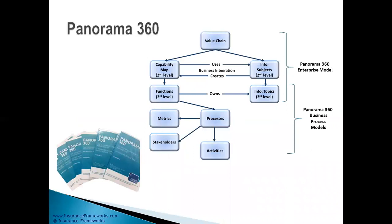Panorama 360 has a number of components from value chain to capability maps, 500 plus business capabilities fully defined, plus an information structure with definitions as well, and an integration map between the two functional and information sites, plus 36 business processes down to the activity level, plus metrics for each process and stakeholders.